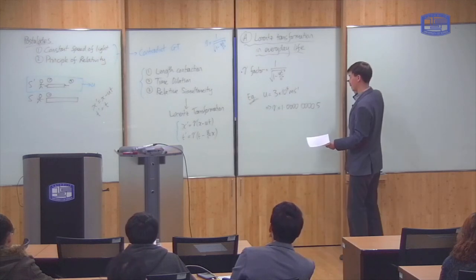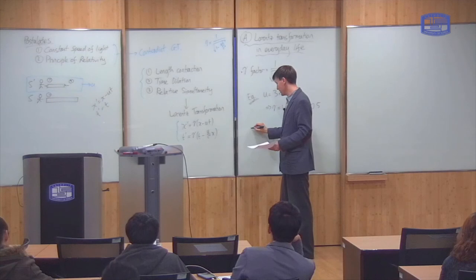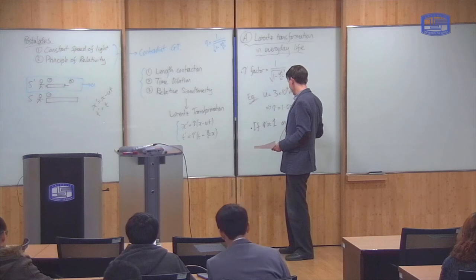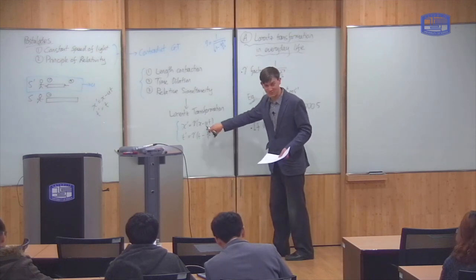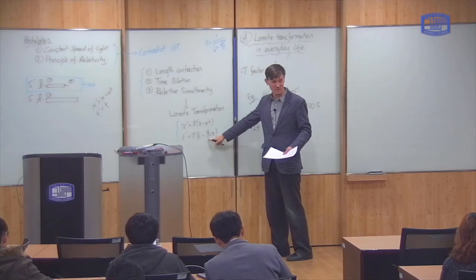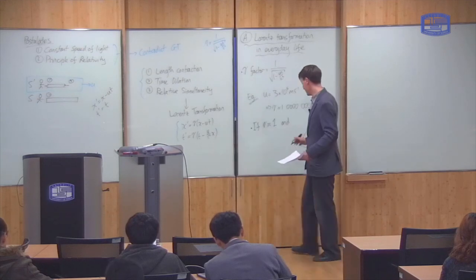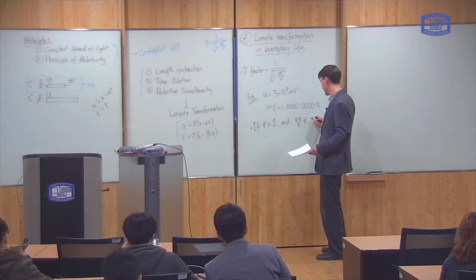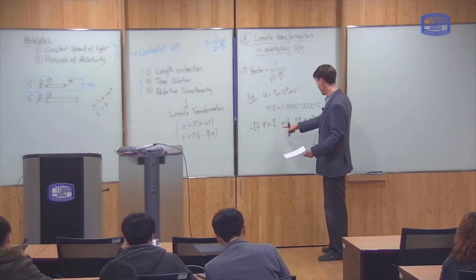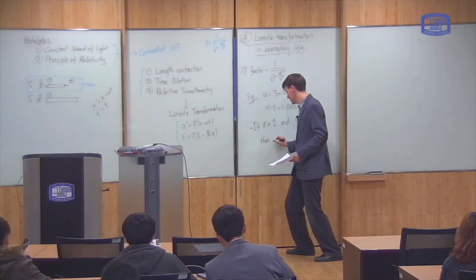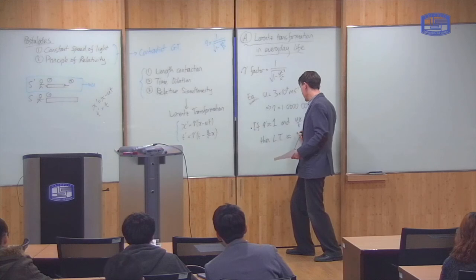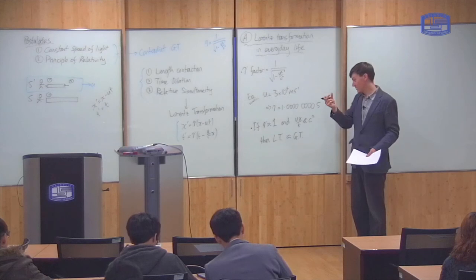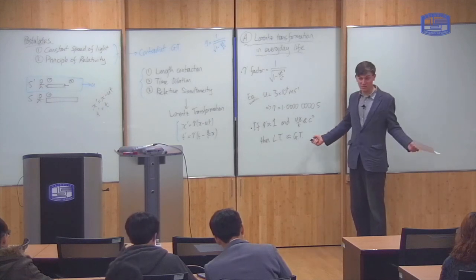If gamma is approximately equal to 1, and the term ux over c squared is also small — which it generally will be because c squared is a very large number — then the Lorentz transformation is approximately the same as the Galilean transformation, to a very good approximation. This explains why we never noticed the Lorentz transformation before: in everyday situations, the two transformations are essentially the same.